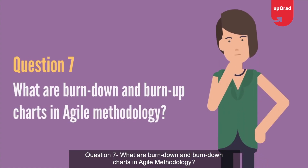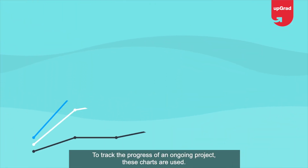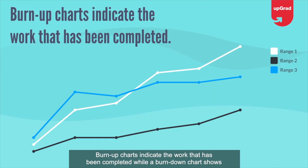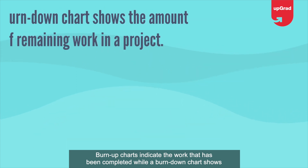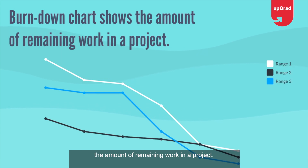Question 7: What are Burn-up and Burndown Charts in Agile methodology? To track the progress of an ongoing project, these charts are used. Burn-up charts indicate the work that has been completed, while a Burndown chart shows the amount of remaining work in a project.